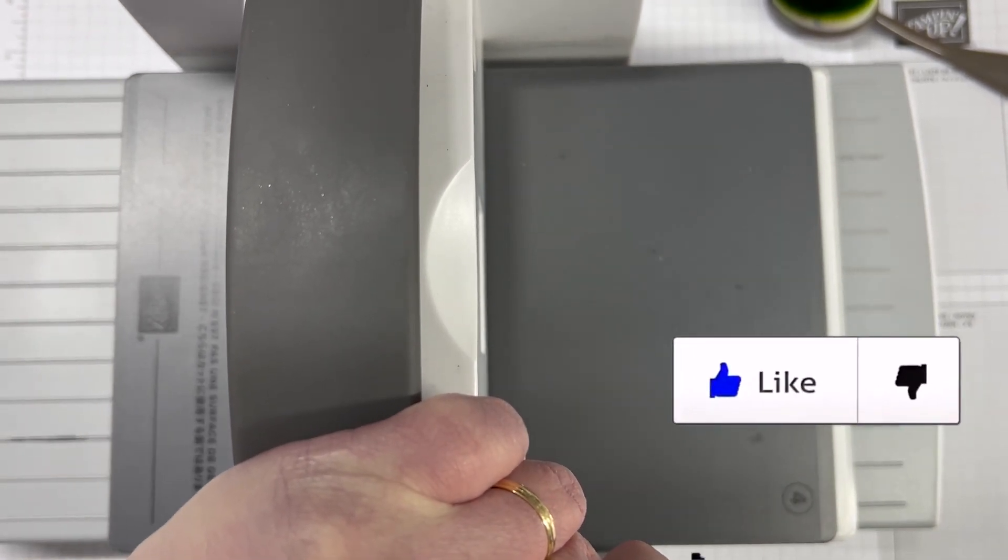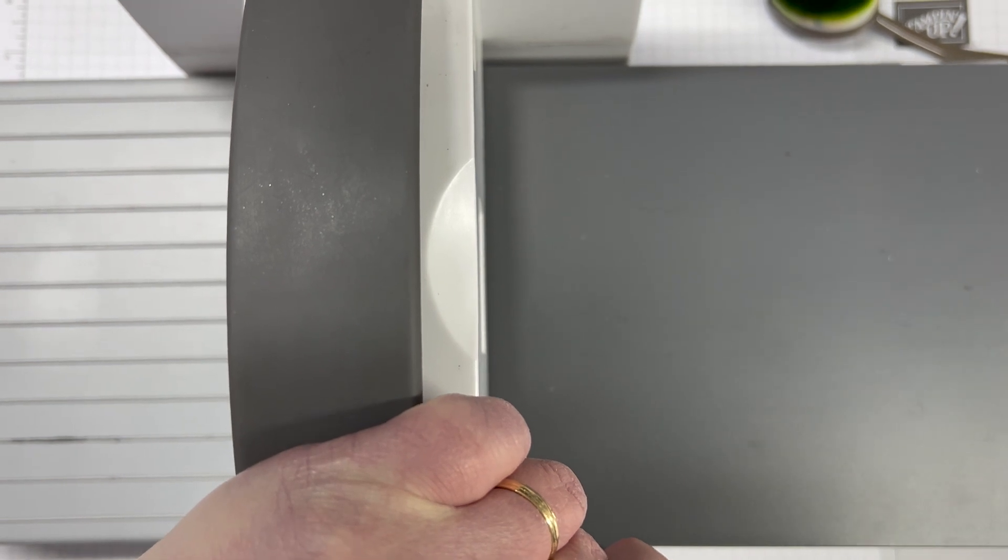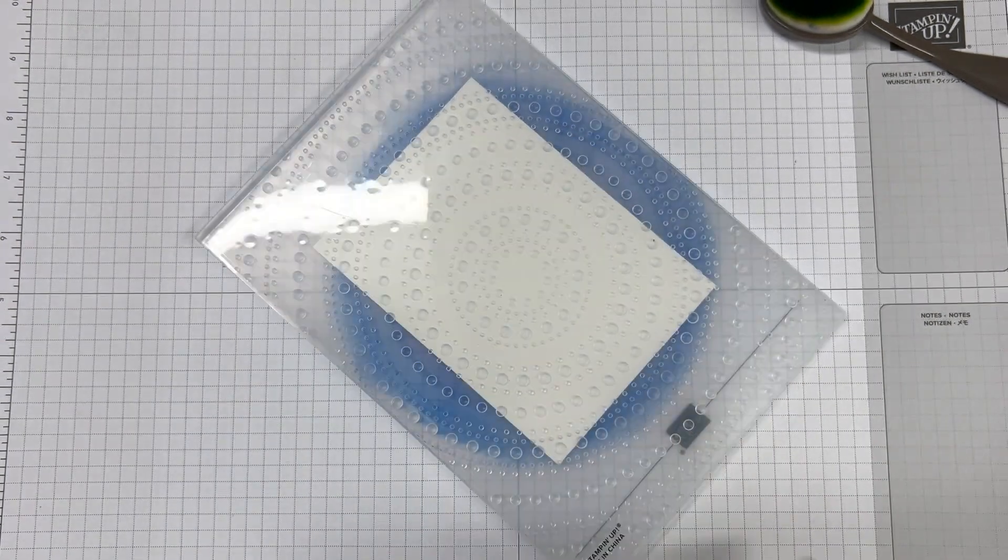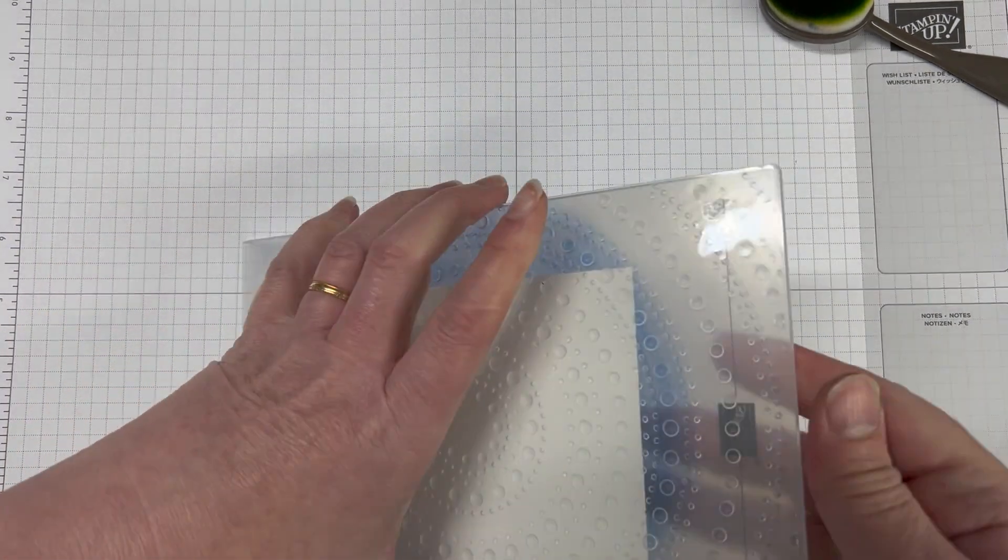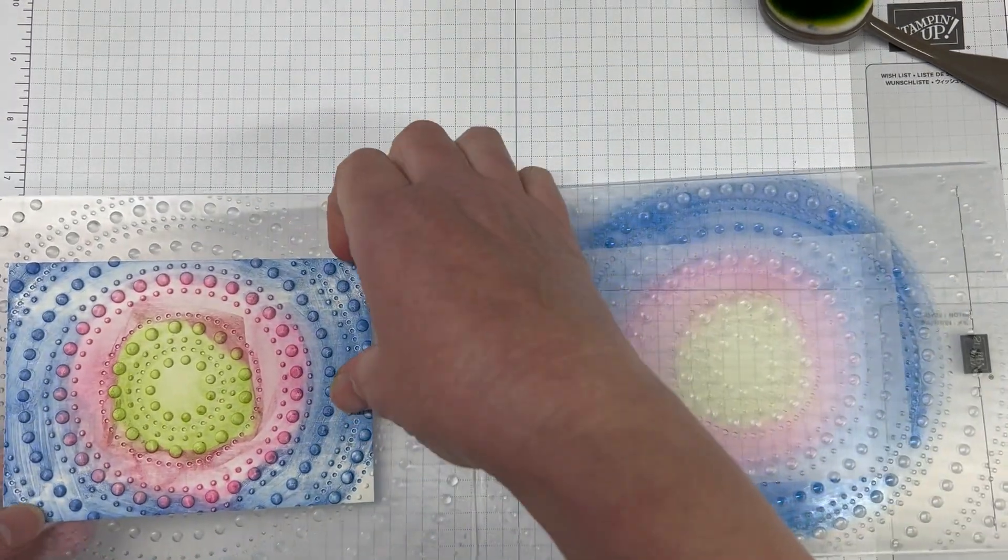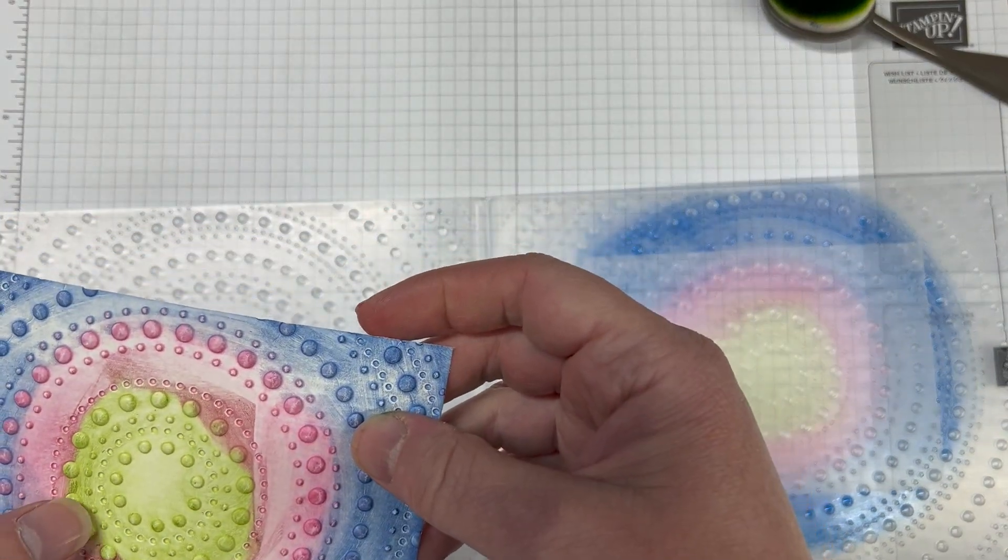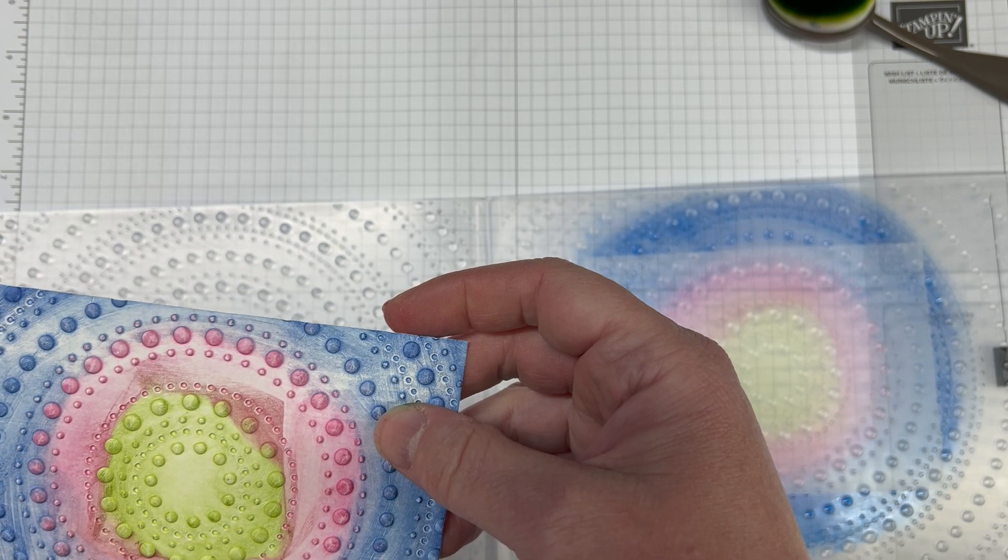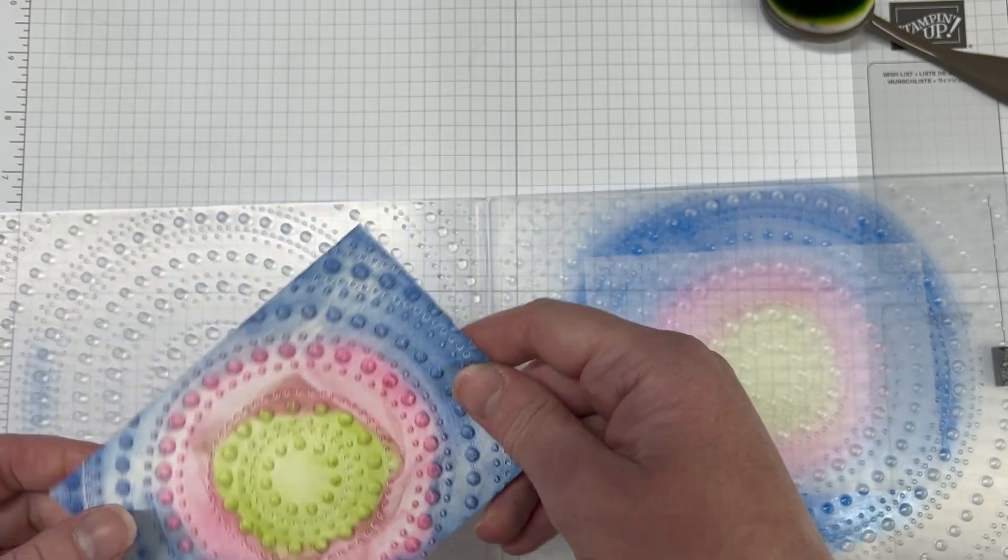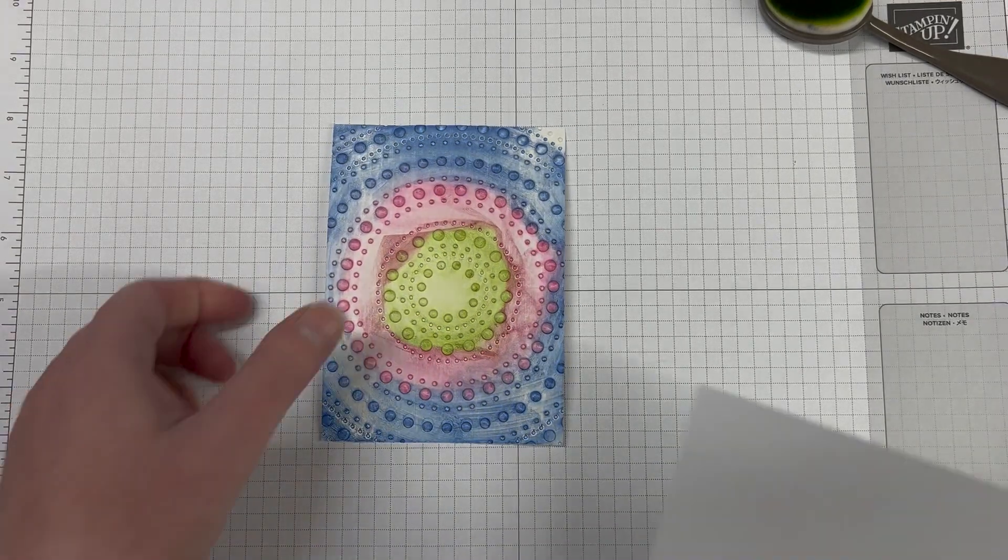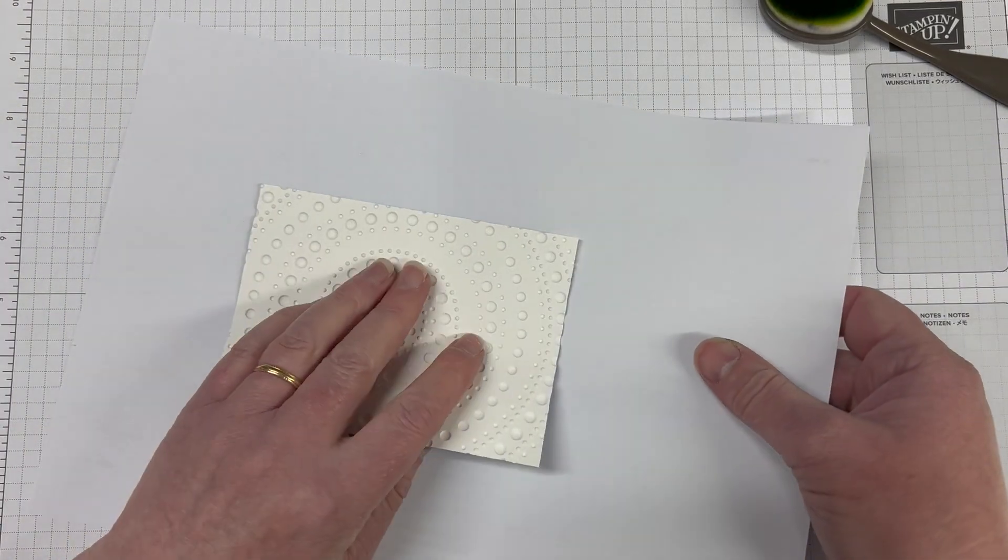I've got my piece of basic white here. We're going to run it through with the plate one and four, which is that grey 3D plate. If you're not using 3D embossing folders, use the normal platform and plates. Once this comes out, I'll notice that's the wrong side, but I'm going to show you how I fixed it.